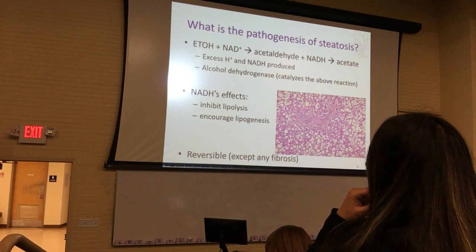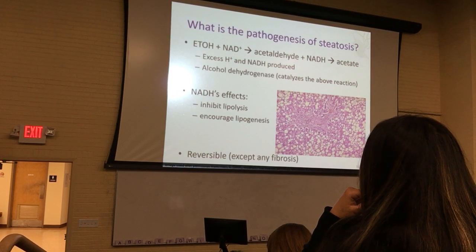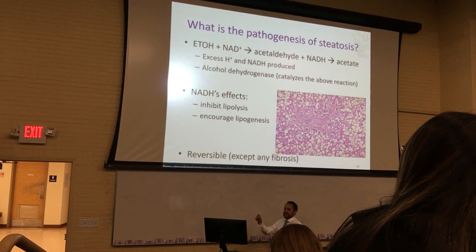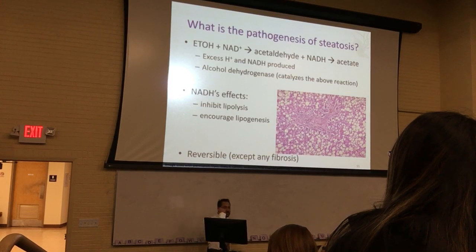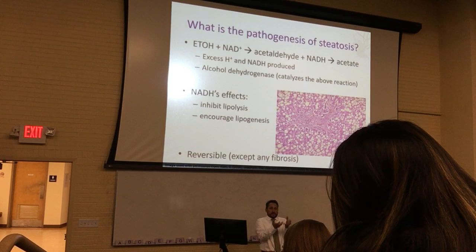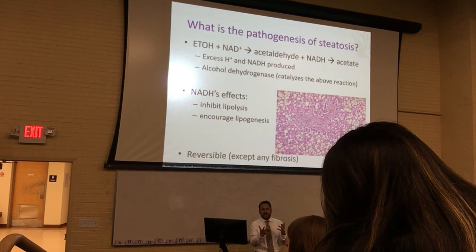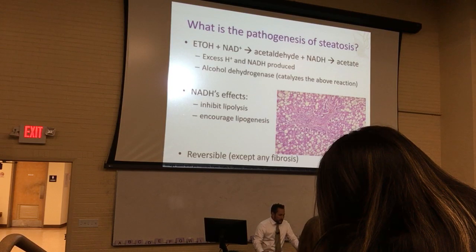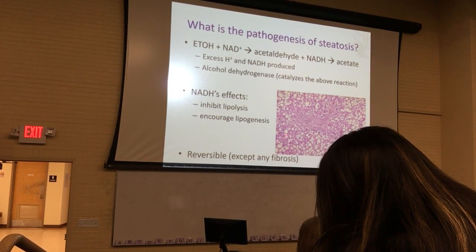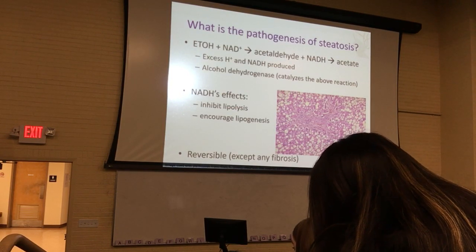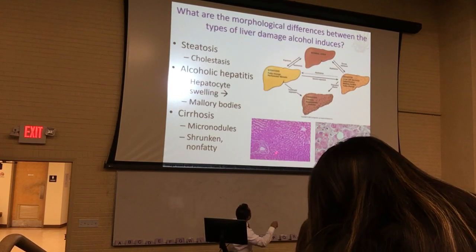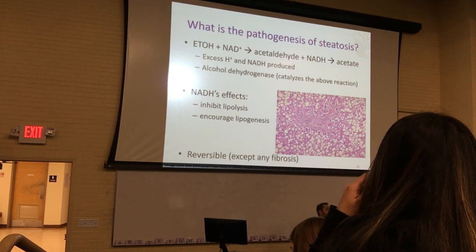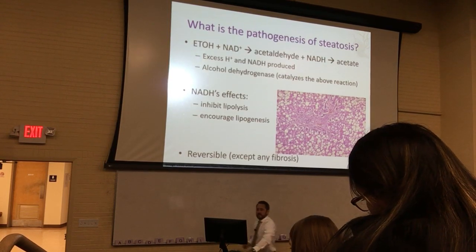In this histology you can see a fatty liver phenotype taking place — you can appreciate all the open vacuoles. In contrast, this is normal liver over here. In steatosis, this fatty liver change is reversible as long as it doesn't convert to scar or fibrosis.